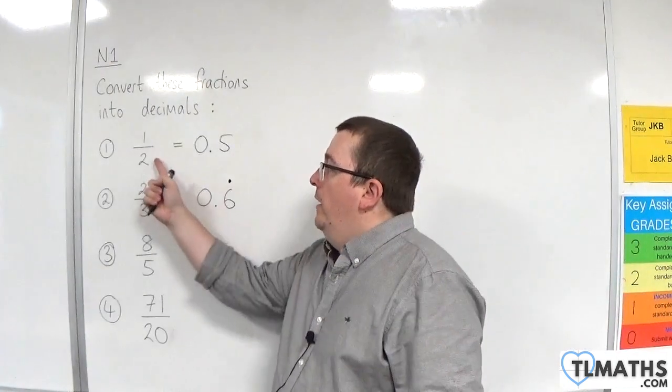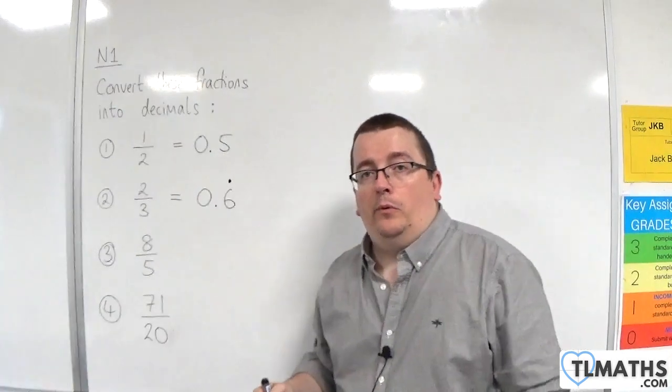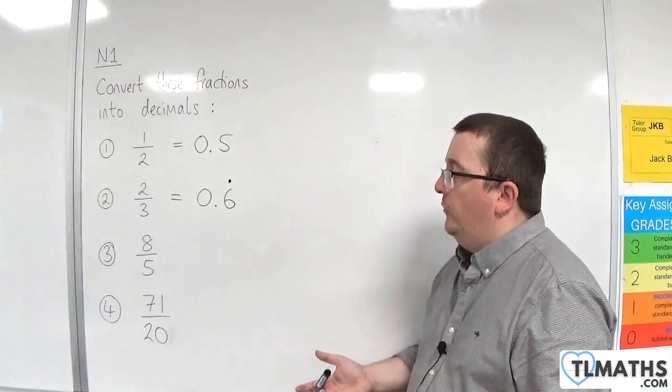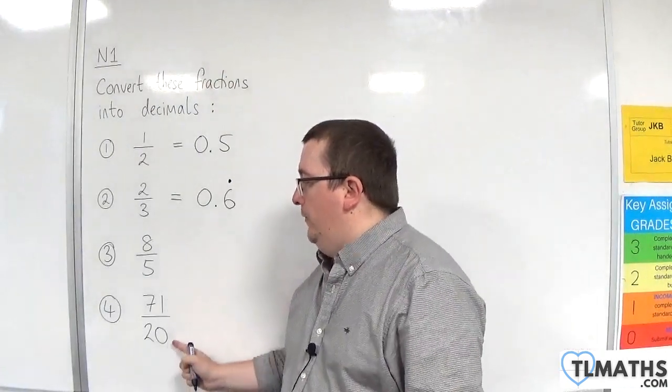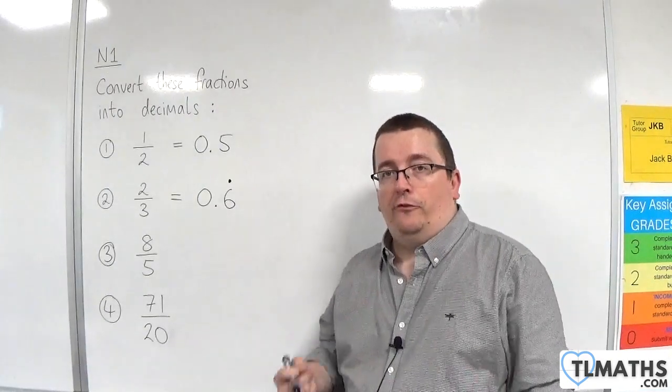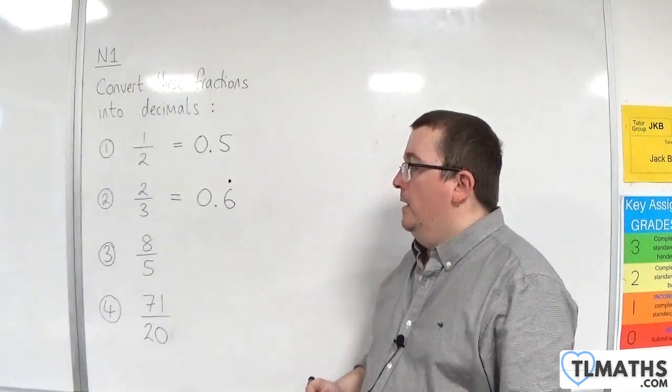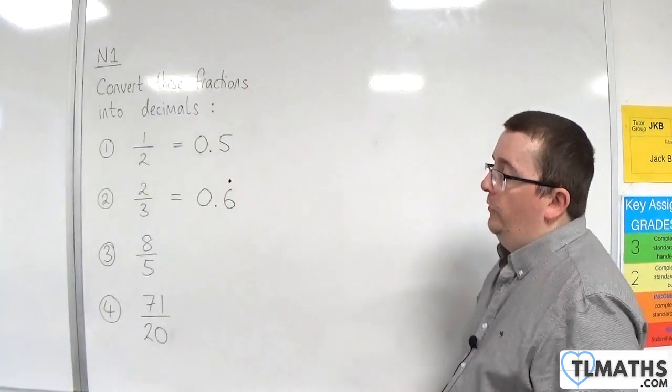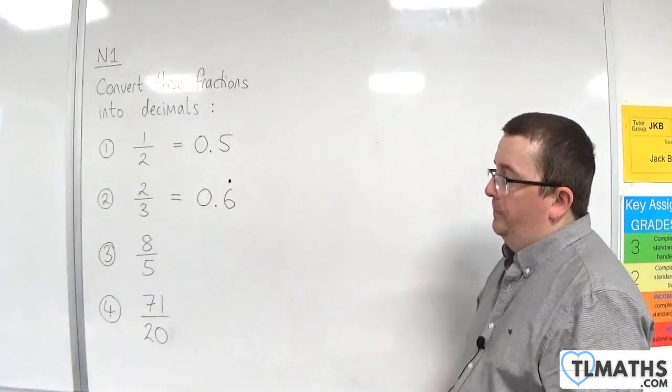Now, 1 half and 2 thirds are both examples of proper fractions, as we learned in the previous video. And 8 fifths and 71 over 20, these are examples of improper fractions. Because they are top-heavy, the numerator is greater than or equal to the denominator.